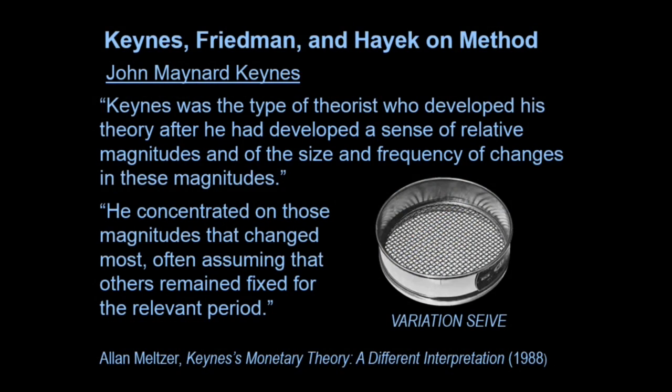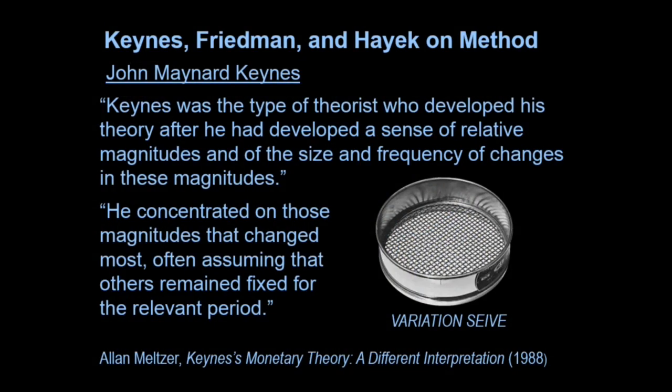I depicted this as a variation sieve. Collect all the data you have on all the magnitudes you can think of, find whatever the sigma is — the extent of variation — and pour them through this sieve. All the things that don't seem to vary much fall through the sieve. The things that vary a lot stay in the sieve. So now you've got a sieve full of aggregates that flop around a lot, and those become your building blocks for macroeconomics. Is that a good strategy for setting out your macroeconomics?